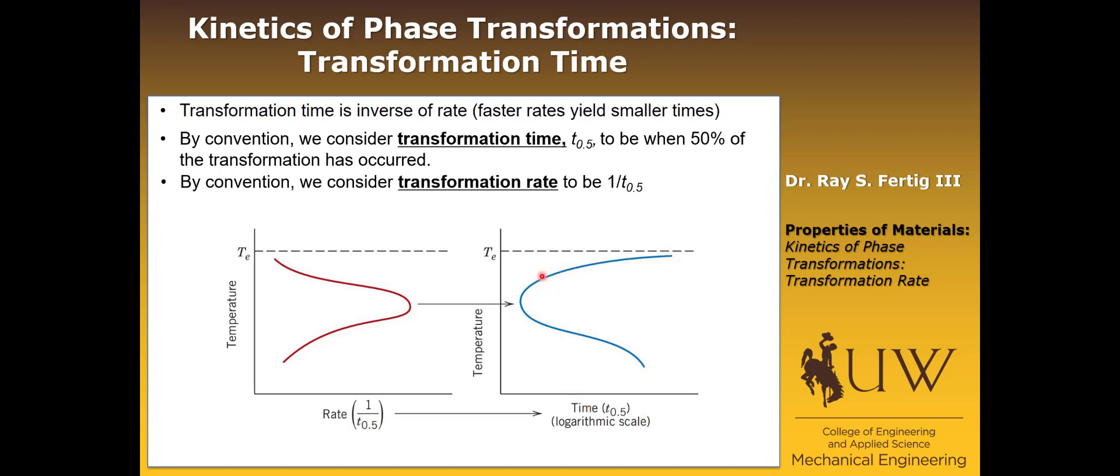we end up with a curve that looks sort of like it's a mirror image where we have the time of transformation getting smaller and smaller, which means that the reaction is speeding up, up to this point. And then now as we lower the temperature further,